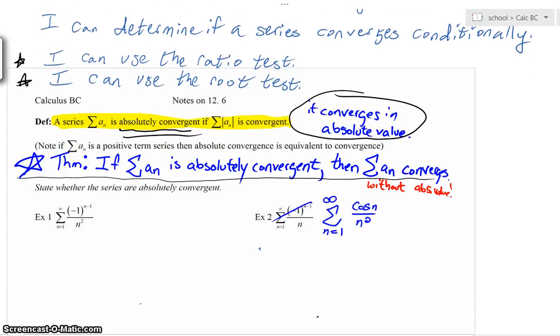A series sigma a_n is absolutely convergent if the series |a_n| is convergent. I want you to think about absolute convergence - it just means put absolute value inside of sigma. And if that series converges in absolute value, then we'd say you're absolutely convergent. If your series is already positive, then obviously absolute convergence is the exact same series, the exact same convergence.